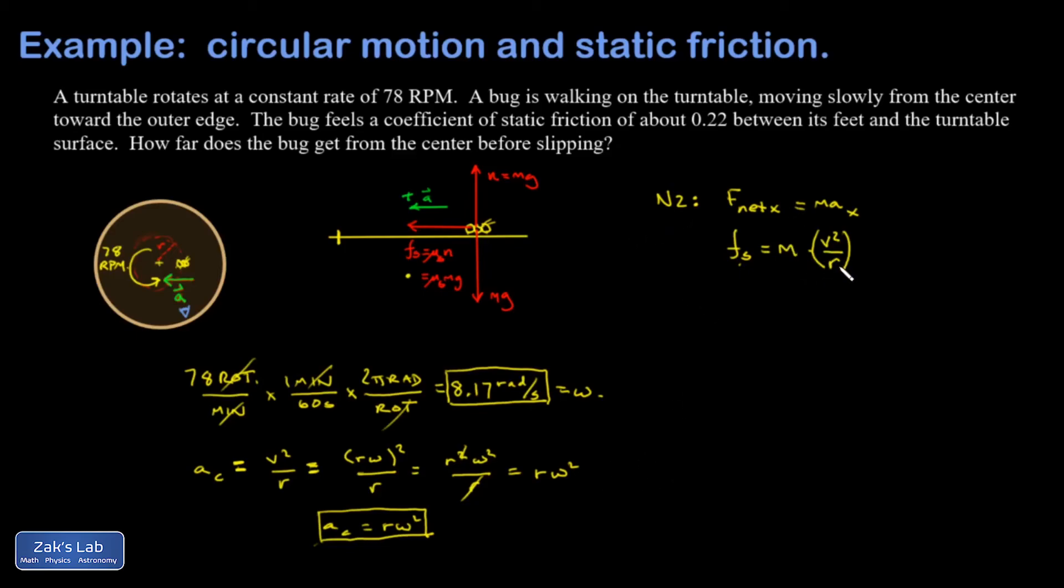I'm going to replace my v squared over r with r omega squared because omega is what I know. And I'm going to replace my static friction force with mu s mg. Just applied my new formula for centripetal acceleration. Notice the mass of the bug is irrelevant. What I'm trying to solve for here is r. And r is the distance at which the bug will actually slip. And I can get a symbolic solution this time.